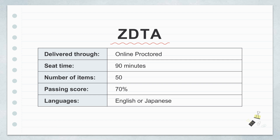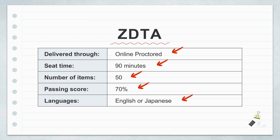Just for context on the exam itself — the ZDTA — it's online, proctored, 90 minutes long, 50 questions. You need a 70% to pass, and it's offered in English or Japanese. Our goal here is to help you cut through the jargon. We want you to understand not just what these different Zscaler parts do, but maybe more importantly, why they matter for security and access today — getting that deeper feel for it.